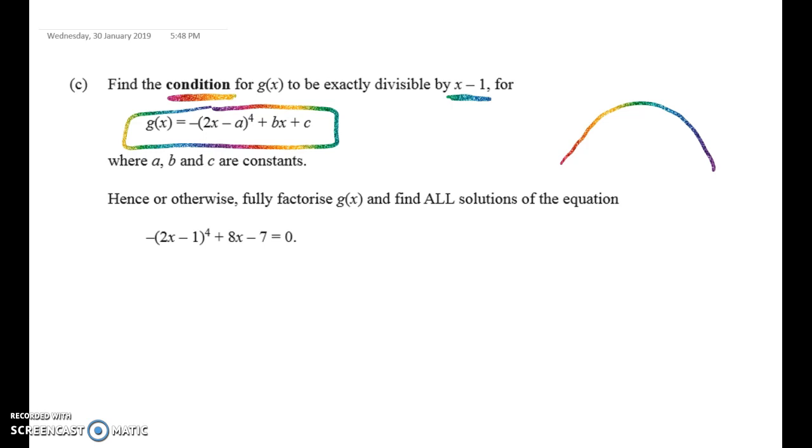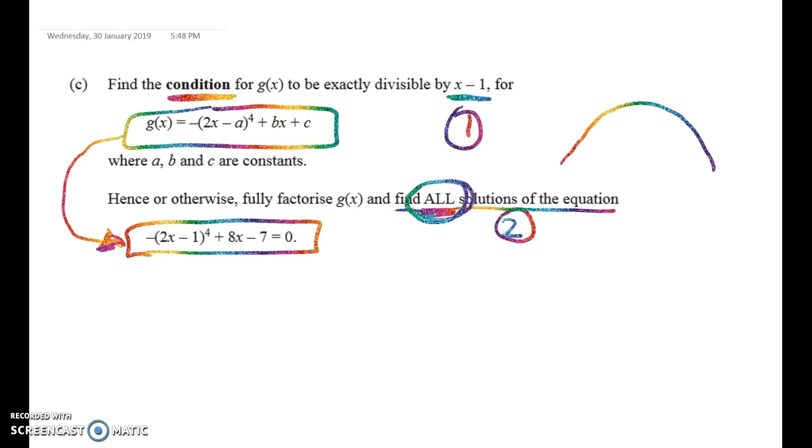But that's only the first bit. That's a good straightforward first bit for one mark out of three. And then the last two marks are down here. Hence or otherwise, fully factorise g(x) and find all solutions of the equation. So we're going to use whatever condition we get from here in this, if it's applicable.